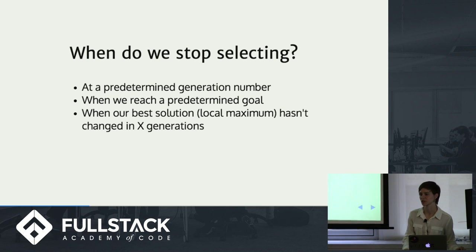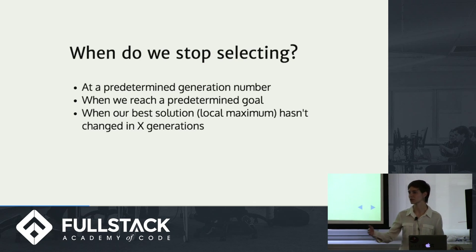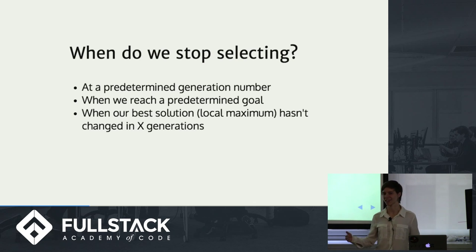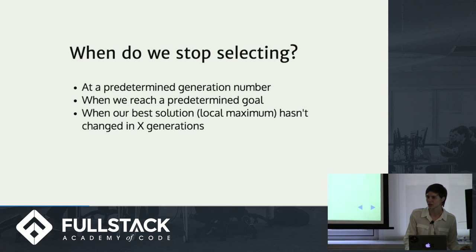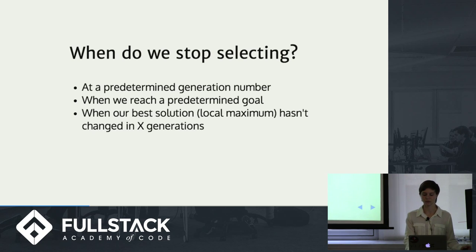The end condition could be a certain generation number, which isn't usually very effective — if you reach that generation before you get anywhere near an optimal solution, you're out of luck. Or you could stop when you reach a predetermined goal, but as I said, we don't always know what that goal is. So usually we want to stop when our best solution hasn't changed in a certain number of generations.